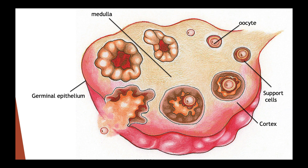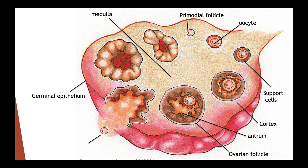Primary follicles are also present in the cortex. The ovarian follicle has a fluid-filled cavity called the antrum. During ovulation, the ovum is discharged from the ovary. The ruptured ovarian follicle becomes the corpus luteum and later the corpus albicans.